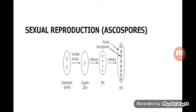The zygote inside the ascus divides — first into two, then four, then eight. Keep in mind the division is always in even numbers: two, four, eight. This is because equal numbers of positive and negative cells must be formed — if divided into four, there are two positive and two negative; if eight, four positive and four negative.